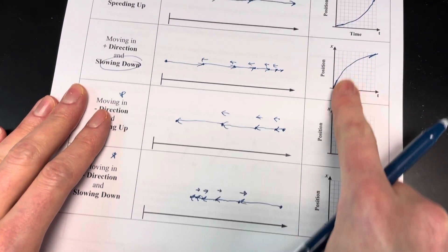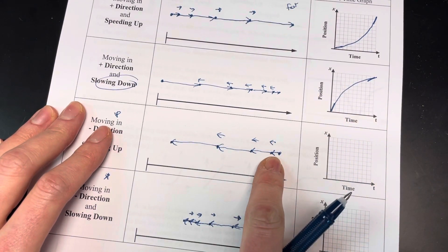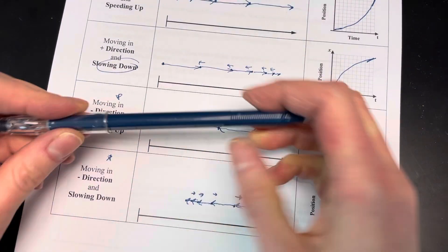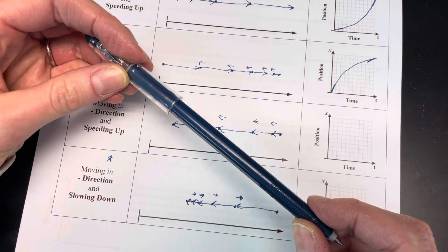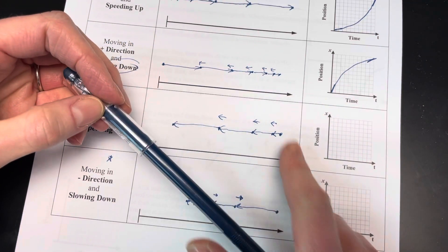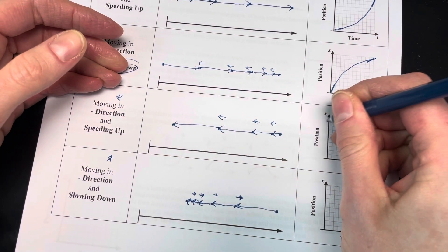Now, I'm going to do the same kind of thing here. It's going slow here and fast there, but it's going in the negative direction, so my line's going to go down. But it's going to start out in the positive area, so it's going to start out up here.